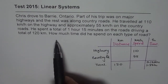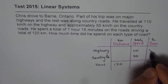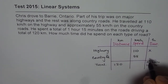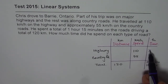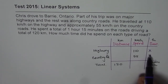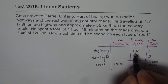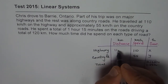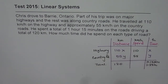We need to find how much time he spent on each type of road. Since we have to find time, let x be the time in hours on the highway and y be the time in hours on the country road. The distance traveled will be speed times time: 110x on the highway and 55y on the country road. That gives us two equations.